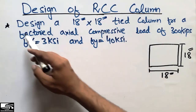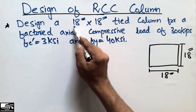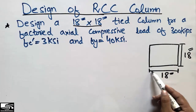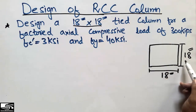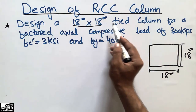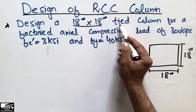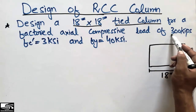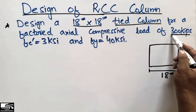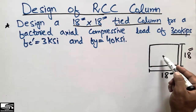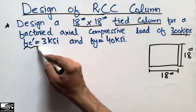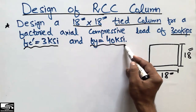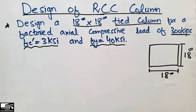We are going to design an 18x18 inch square tied column for a factored axial compressive load of 300 kips. The concrete strength is 3 ksi and the steel yield strength is 40 ksi (Grade 40 steel).